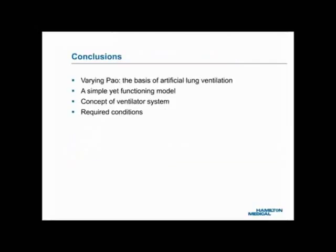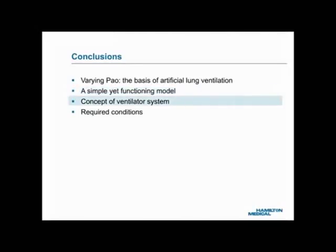To sum up: in the last training unit, Lung Ventilation, Natural and Artificial, we learned that artificial lung ventilation is achieved by varying airway opening pressure, or PAO. In this unit, we have modified a balloon inflation system into a simple but fully functioning model of a ventilator system. This model helped us understand how a varying PAO can be generated to intermittently inflate and deflate a balloon. A critical concept of a ventilator system has been introduced — the tool for mechanical ventilation therapy is the ventilator system, and the ventilator is just one of its required parts. Finally, we discussed the conditions required for a ventilator system to work as designed: if one condition is not fully satisfied, the system will not work properly or will not work at all.